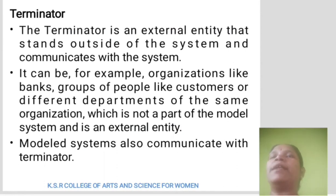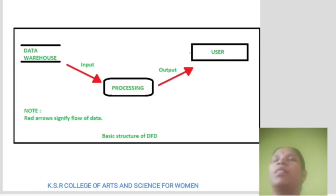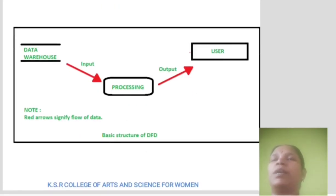The fourth component is the Terminator. The terminator is the external entity that stands outside of the system and communicates with it. It can be, for example, an organization like a bank, a group of people like customers, or a different department of the same organization that is not part of the modeled system and is an external entity. The modeled system also communicates with the terminator. This is the basic structure of DFD.